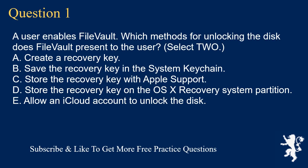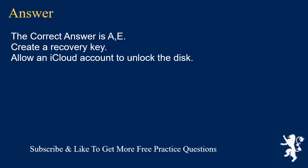Question 1. A user enables FileVault. Which methods for unlocking the disk does FileVault present to the user? Select 2. A. Create a recovery key. B. Save the recovery key in the system keychain. C. Store the recovery key with Apple support. D. Store the recovery key on the OSX recovery system partition. E. Allow an iCloud account to unlock the disk. The correct answer is A and E: Create a recovery key, and Allow an iCloud account to unlock the disk.